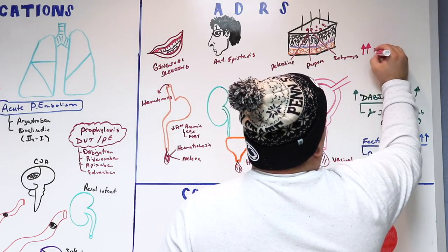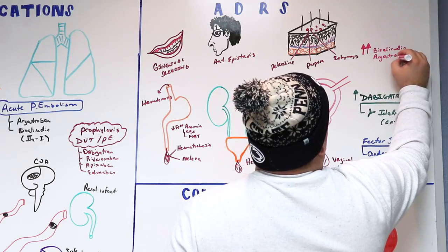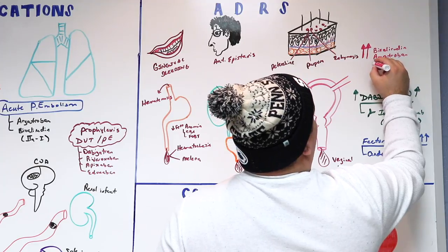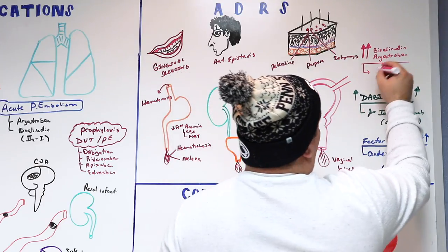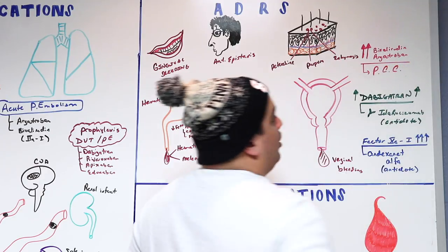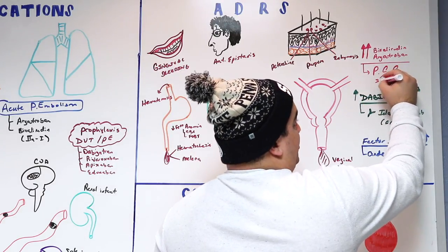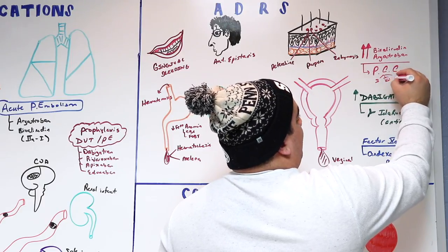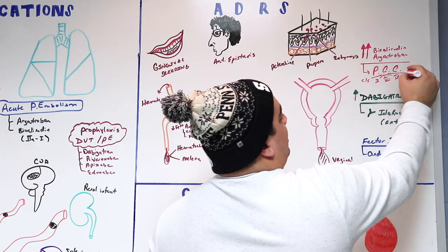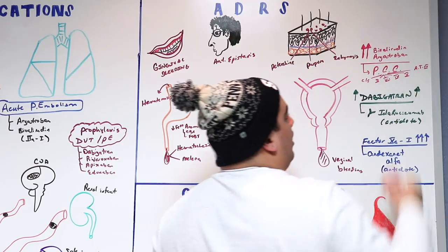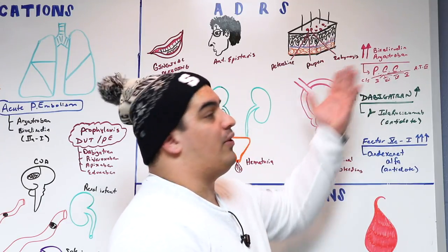For argatroban and bivalirudin overdose, there is no specific antidote. The main approach is to replace clotting factors using prothrombin complex concentrate (PCC), which contains four main factors: factor 2 (thrombin), factor 7, factor 9, and factor 10, along with protein C, protein S, and antithrombin 3, to help counteract severe bleeding.